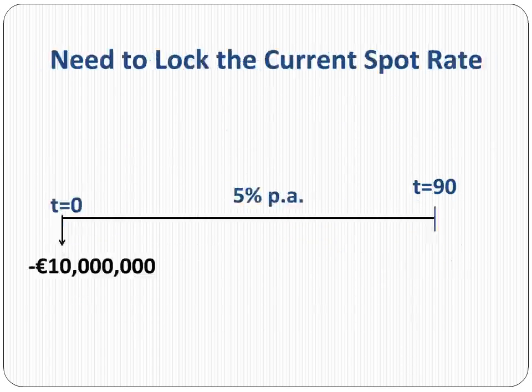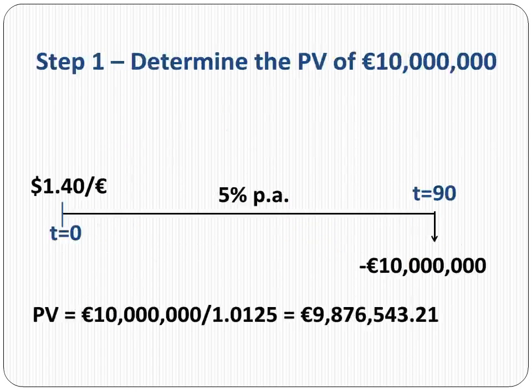The idea behind a money market hedge is to lock the current spot rate. One way to accomplish this would be to pay the supplier today. However, that would not be a wise thing to do. So the importer needs to invest the present value of 10 million euros. Upon maturity in 90 days, the importer will take the 10 million euros and make the payment to the supplier.